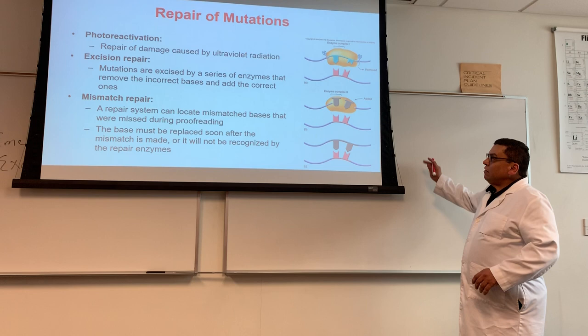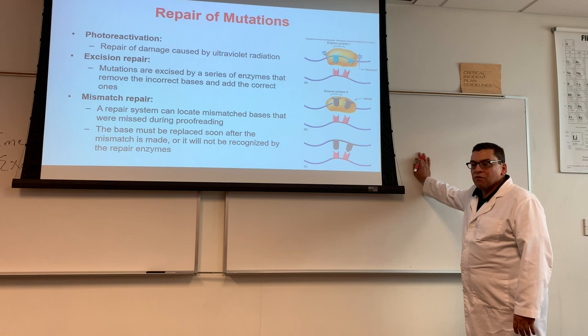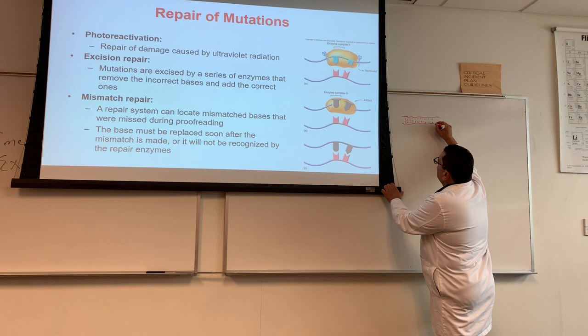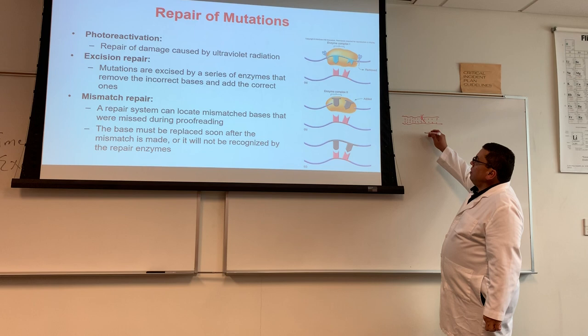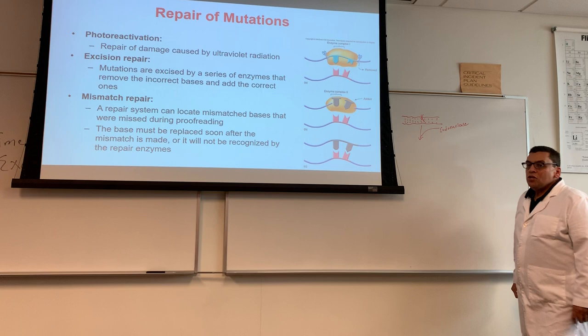There are four enzymes involved in excision repair — you need to know their names, what they do, and their order of appearance. You have double-stranded DNA with hydrogen bonding between the strands, and there's a genetic mutation. The first enzyme that comes into play is called endonuclease.